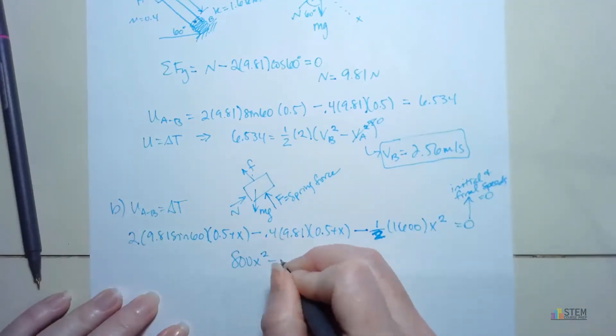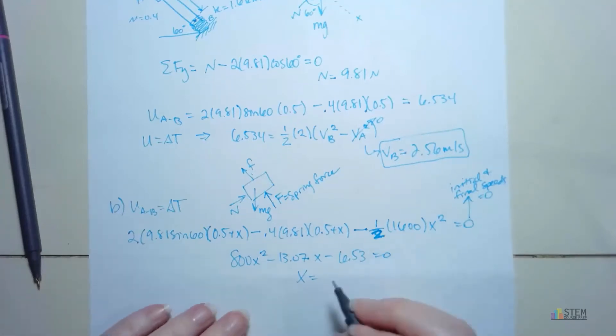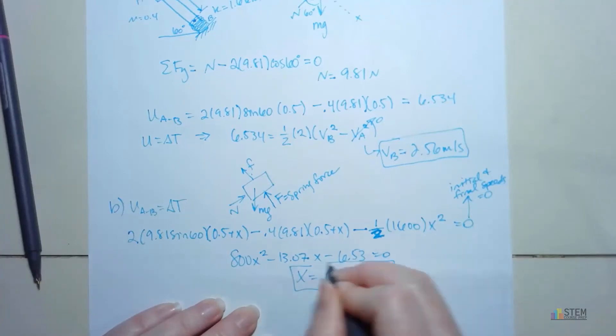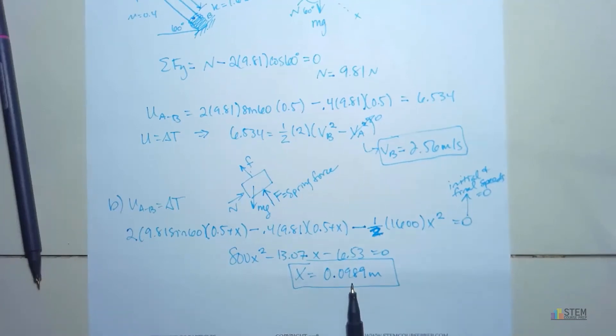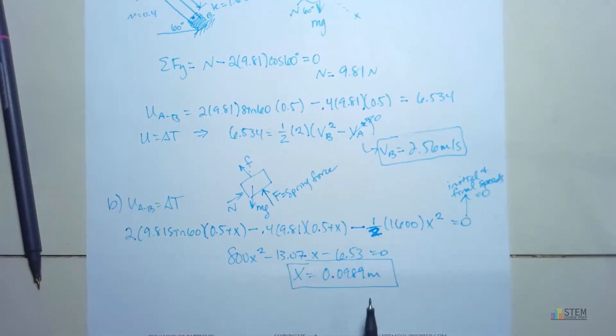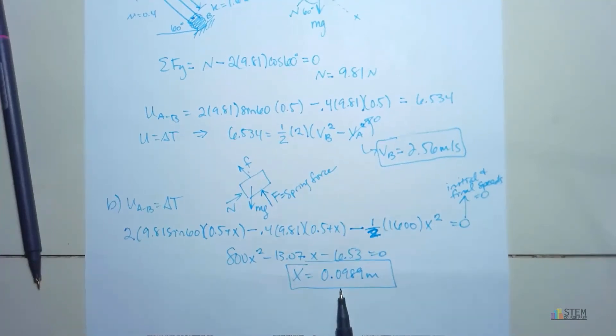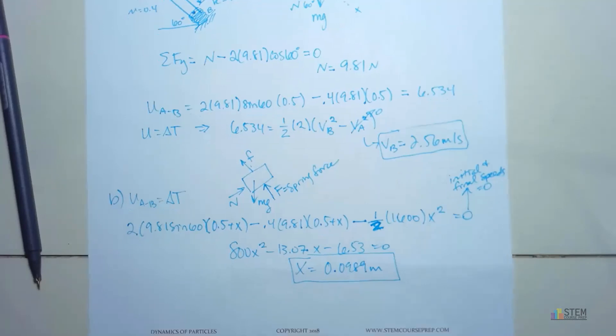So now we've got that. Let's go ahead and simplify this down. You'll get 800X squared minus 13.07X minus 6.53 equals 0. So now you can just solve for X. You want to pick the one that is the positive value, so you get 0.989 meters. So this is how far the spring is going to be compressed. Eventually that spring will push the mass back up, but this is how far down it goes until the velocity, or the speed, gets to 0.